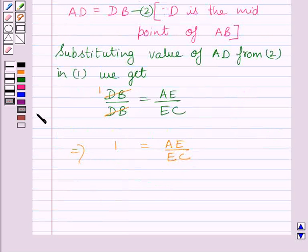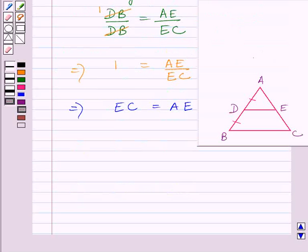Multiplying both sides by EC, we get EC is equal to AE. EC is equal to AE implies E is the midpoint of AC.